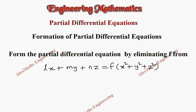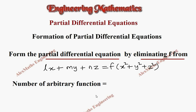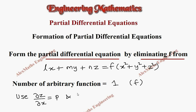Hi students, this is Alex here. In this video we are going to form the partial differential equation by eliminating the arbitrary function f. The number of arbitrary functions equals 1, that is the function f. So we are going to use only the first order derivatives: dou z by dou x, named as p, and dou z by dou y, named as q, to eliminate the arbitrary function.